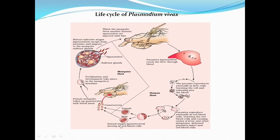The sexual stages, called gametocytes, develop in red blood cells, and male and female gametocytes are produced. A female mosquito takes up gametocytes with its blood meal, and fertilization and development take place in the mosquito's intestine. Inside the mosquito, the mature infective stage sporozoites escape from the intestine and migrate to the mosquito's salivary glands. When the mosquito bites another human, the sporozoites are injected with the bite, completing the life cycle of Plasmodium vivax.